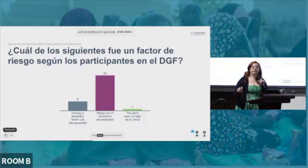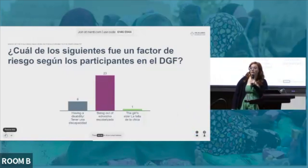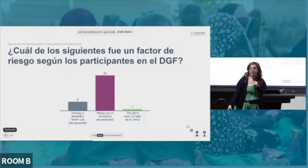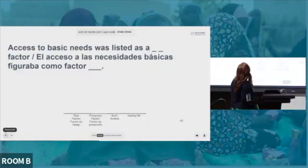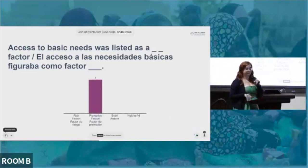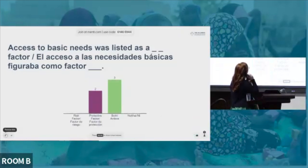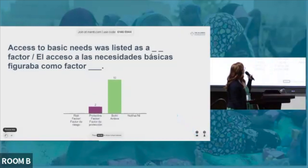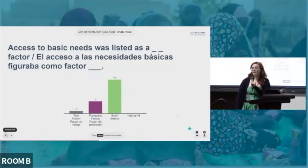The logic being that if a girl is healthy and has a good weight, she is more at risk of being seen as desirable for marriage. Having a disability was actually listed as a protective factor, because community participants felt a girl with a disability would be less likely to be desired in marriage. Access to basic needs was listed as both a risk factor and a protective factor.